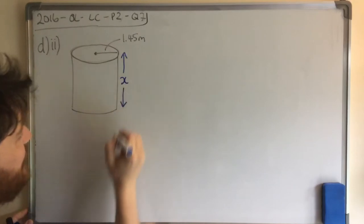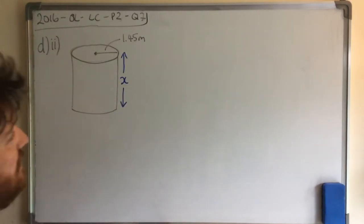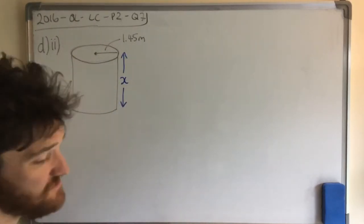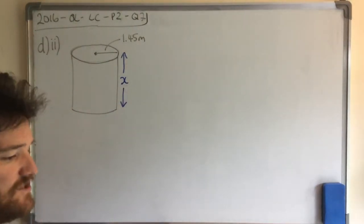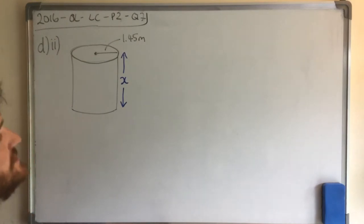You can call it L, you can call it H, you can call it whatever you want. I'm going to call it X, doesn't really matter. The sum of the curved surface areas of the 12 pipes is 3170. Find the length of one pipe, give your answer correct to the nearest metre.